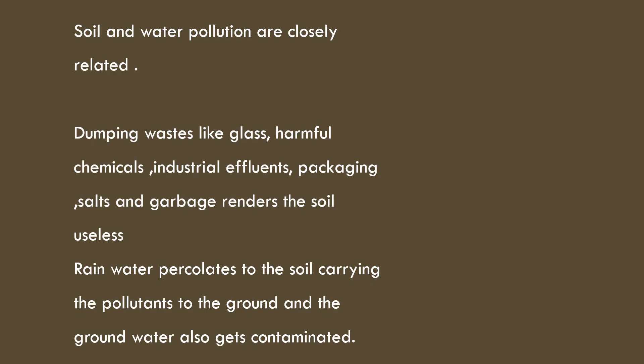Soil and water pollution are closely related. When you dump waste such as glass, harmful chemicals and industrial effluents, the soil loses its fertility and becomes useless. When rain occurs, the rainwater percolates deep down through the soil into the groundwater. When this water is consumed by any form of life — whether human, flora or fauna — they also get contaminated.